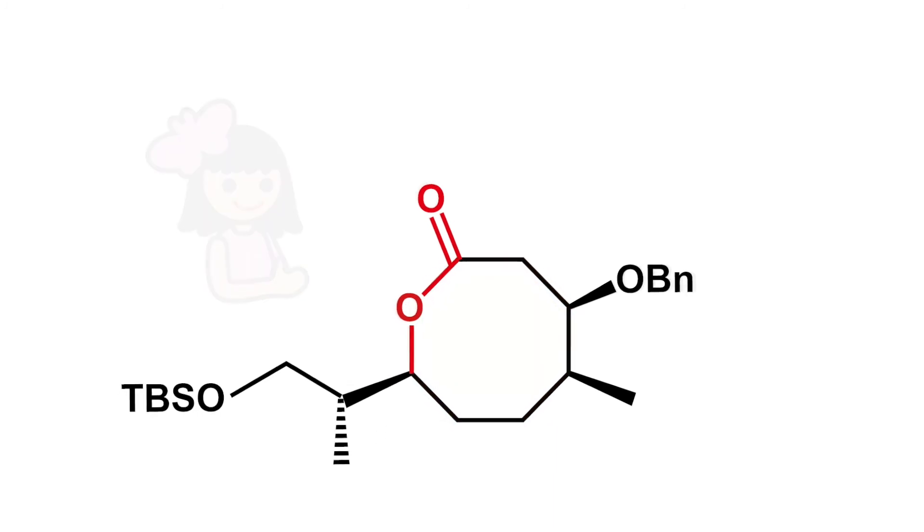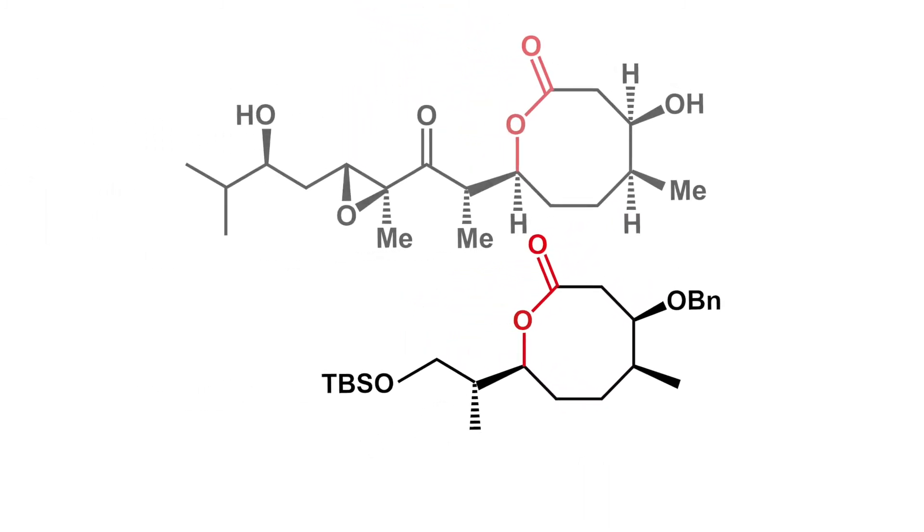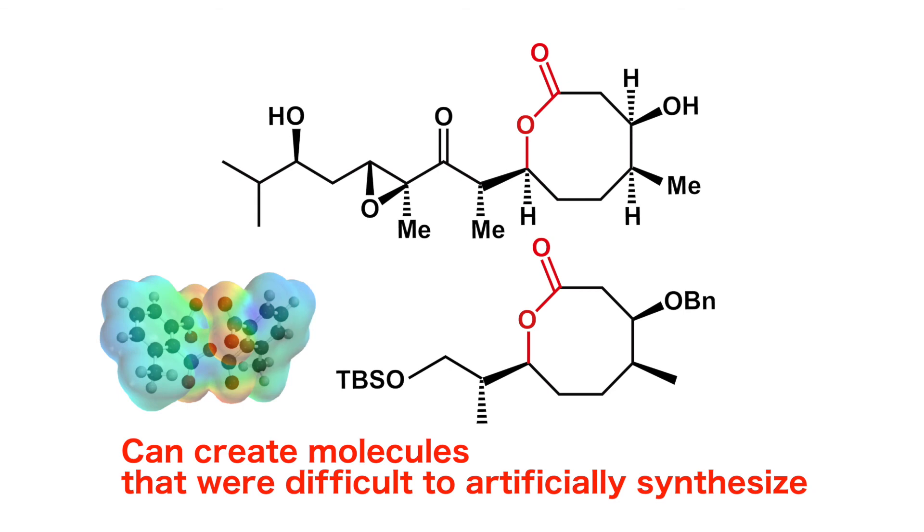With further chemical conversion, this molecule can be used to synthesize octolactin A and create a drug. This is how MNBA enables and simplifies the synthesis of various molecules.